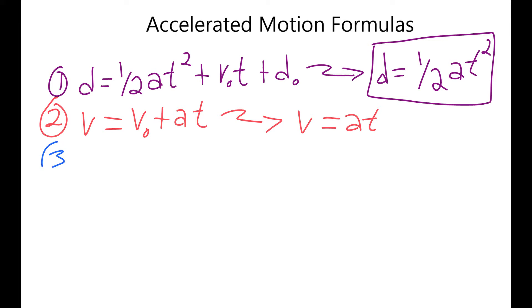The third type of equation is going to be V squared equals V-naught squared, your initial velocity squared, plus two times acceleration times distance. And between those three formulas, you should be able to answer most of the questions that will be on the worksheet.